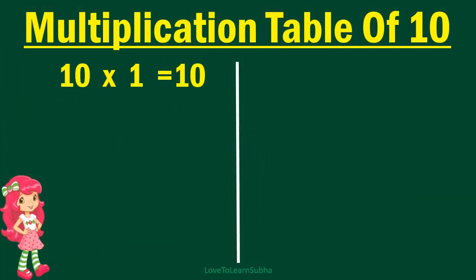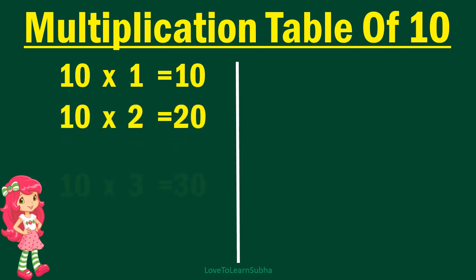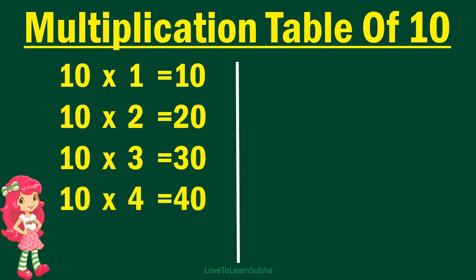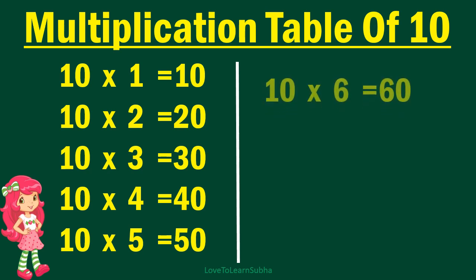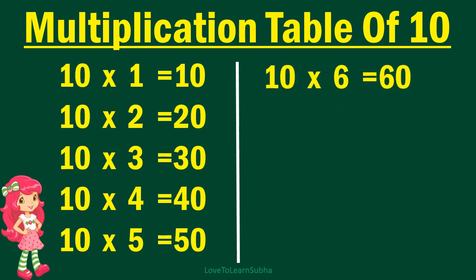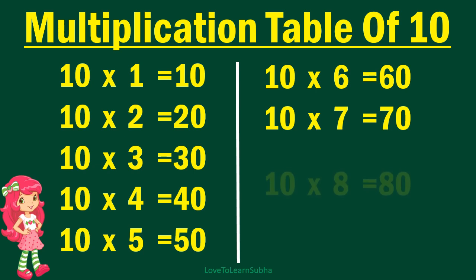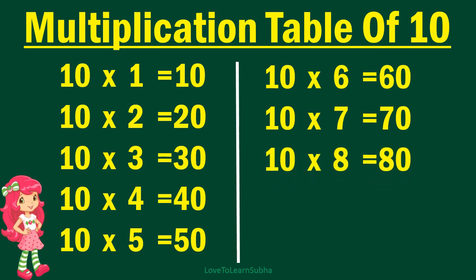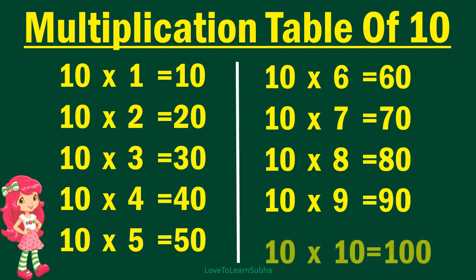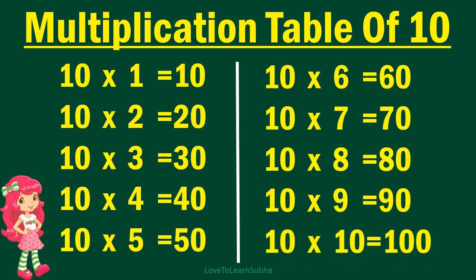10 ones are 10, 10 twos are 20, 10 threes are 30, 10 fours are 40, 10 fives are 50, 10 sixes are 60, 10 sevens are 70, 10 eights are 80, 10 nines are 90, 10 tens are 100.